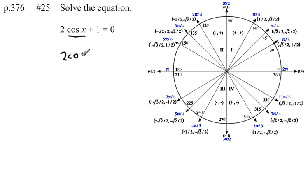That'll give us 2 times the cosine of x equals negative 1. Then let's divide both sides by 2. That gives us the cosine of x equals negative 1 half.